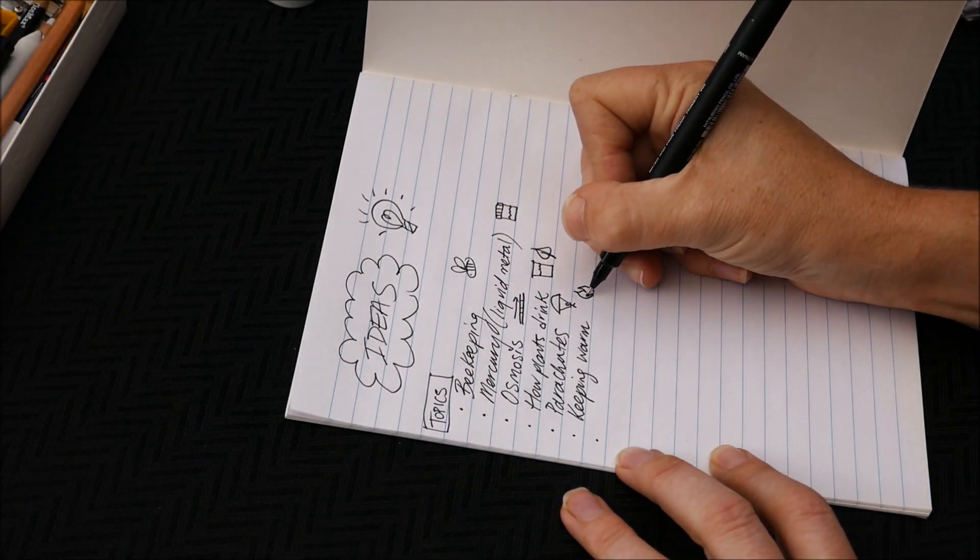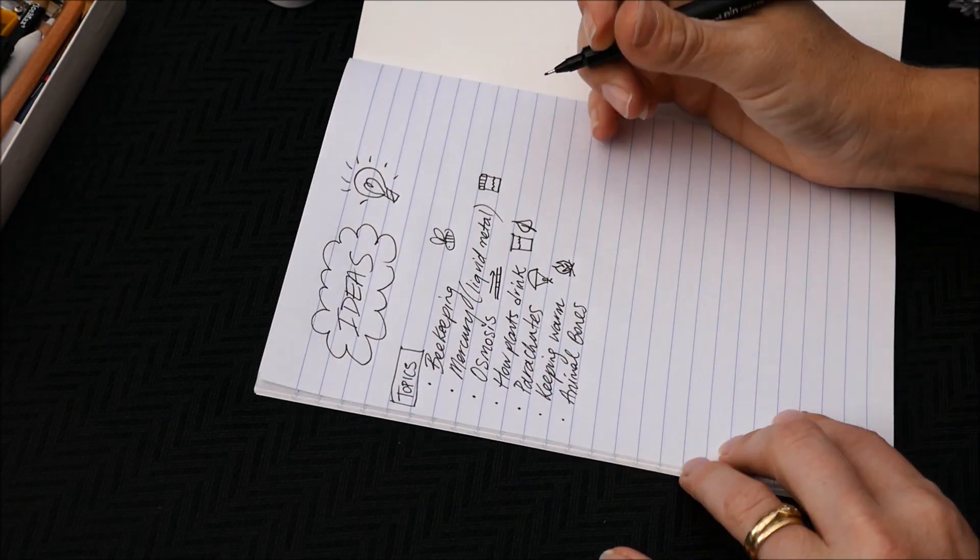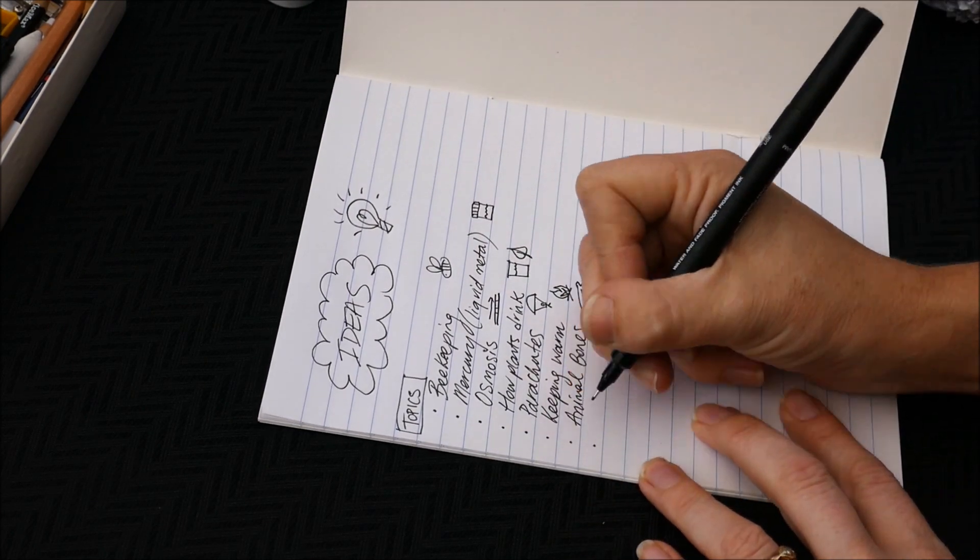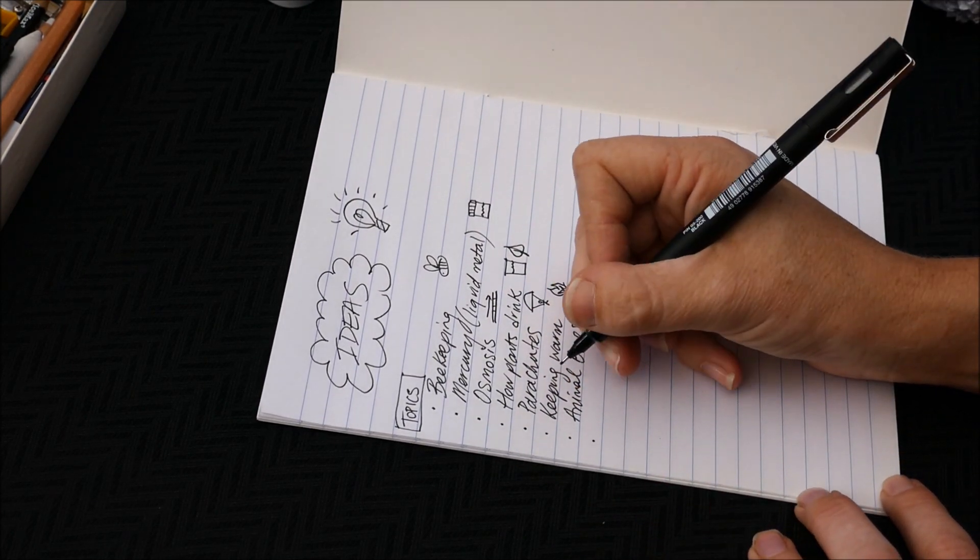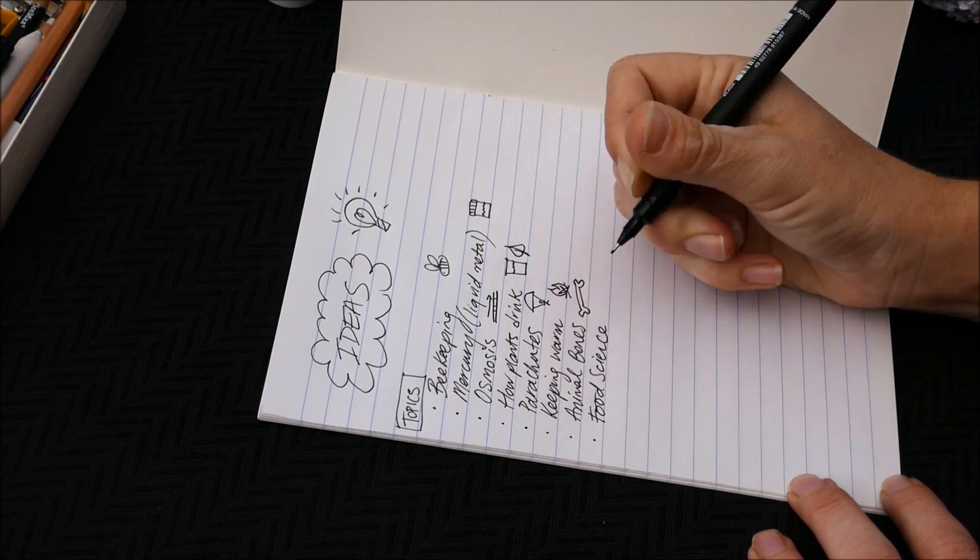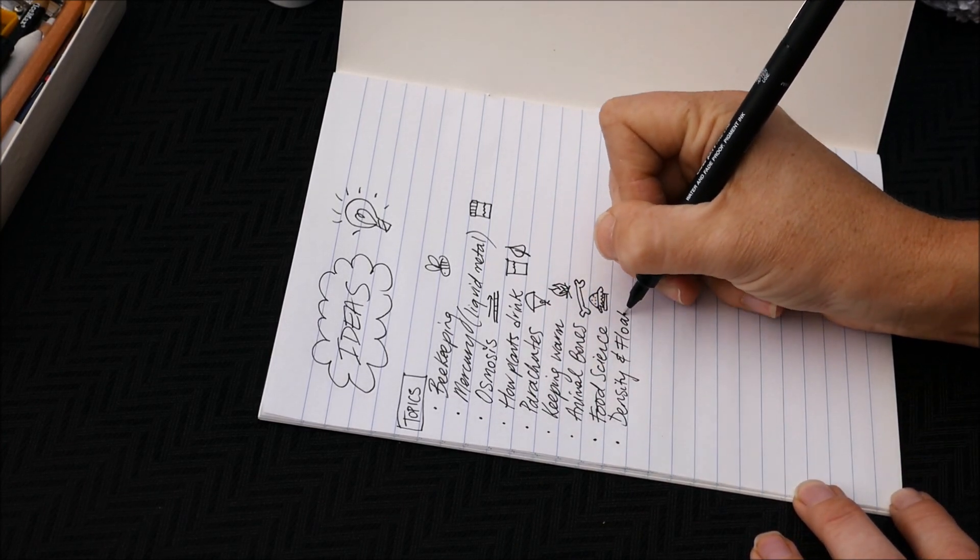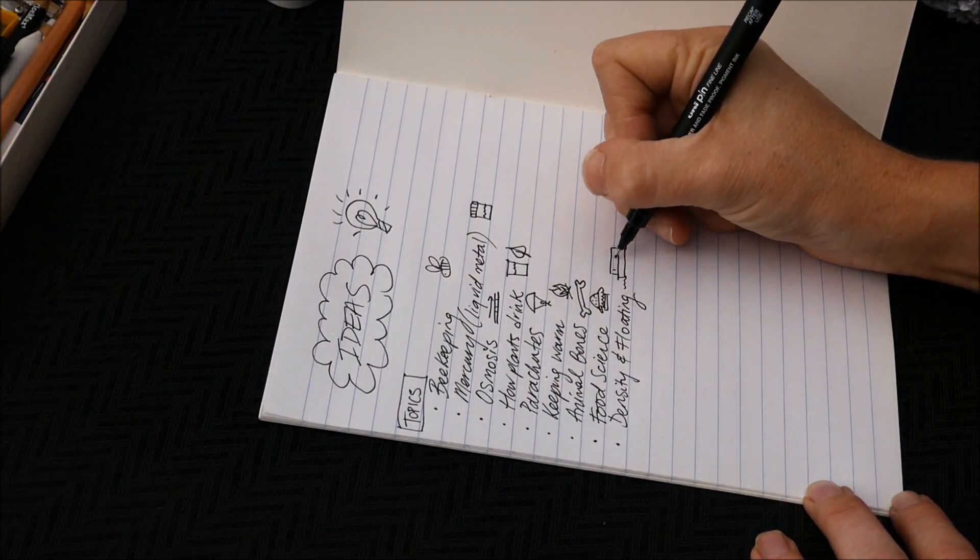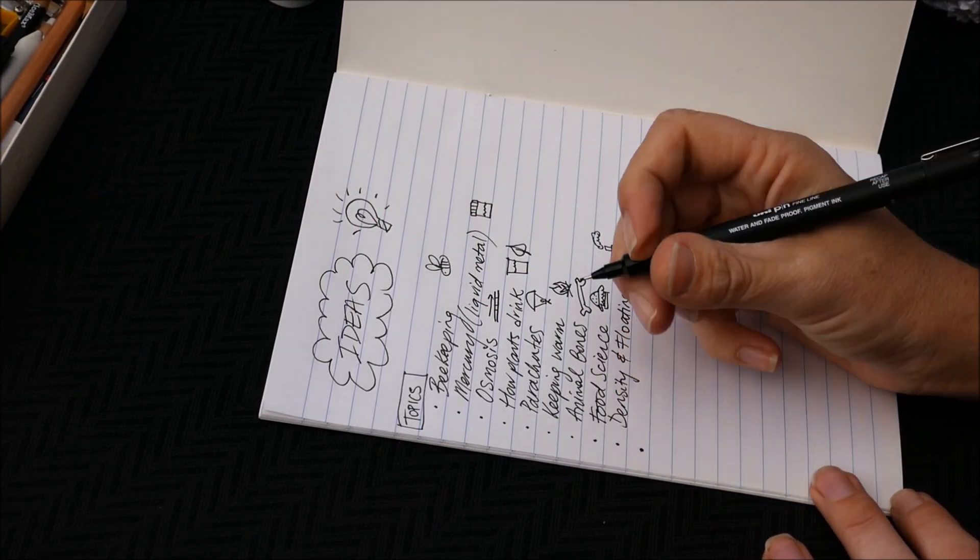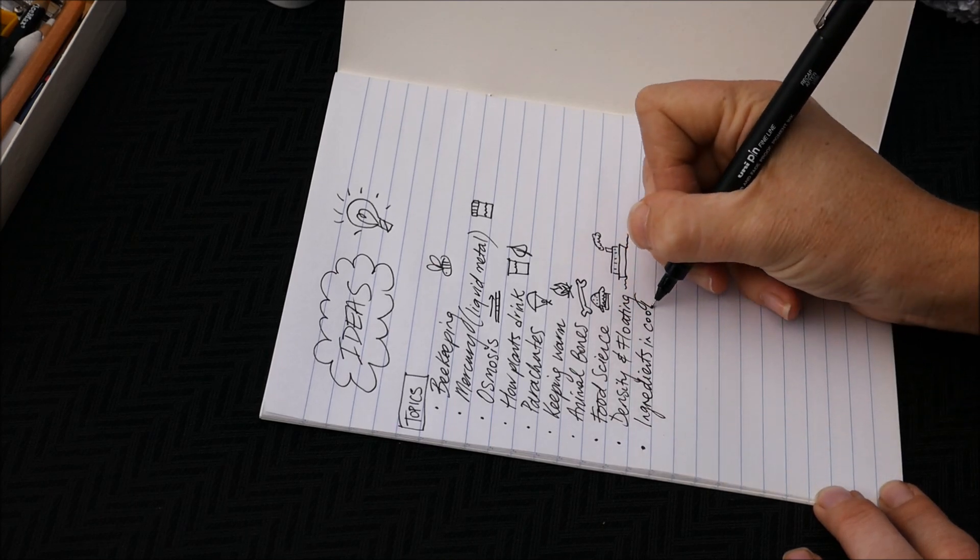And then later on when you have a moment to do some science you can look at that list and say oh yeah that's right I wanted to have a bit of a look at animal bones and that's what I'm going to talk about today or something like that. So as you can see here I'm making a list of ideas for science for Mrs. Max's House show which hopefully we'll be doing in the coming weeks.